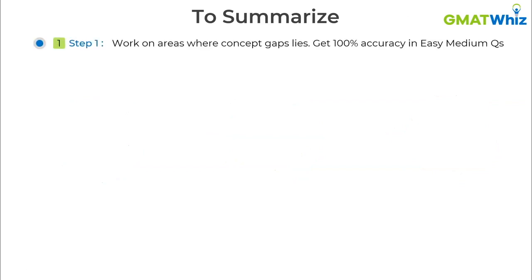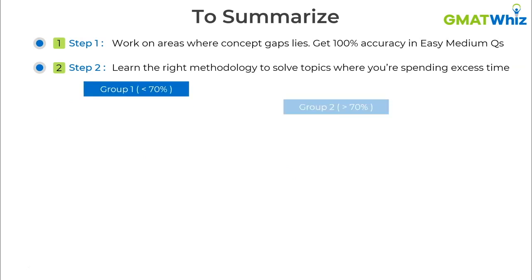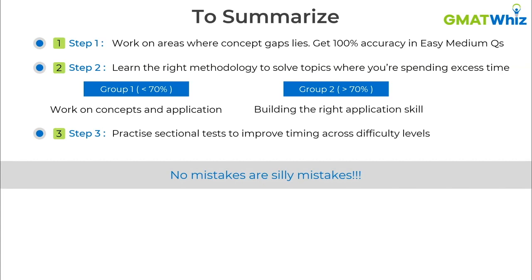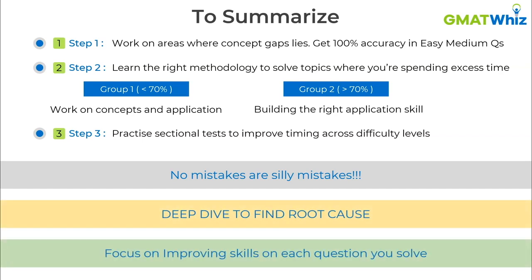To summarize: to get a Q50, work on areas where concept gaps exist, get 90 to 100% accuracy on easy to medium questions, and learn the right methodology for harder topics. Divide topics into two groups: below 70% accuracy means you need to work on both concepts and application; above 70% means focus on application skills only. Practice sectional tests to improve timing, and treat every mistake as meaningful — deep dive to find the root cause. Quality over quantity always.